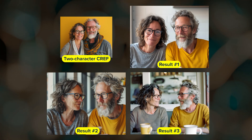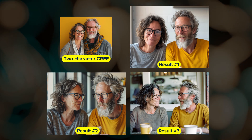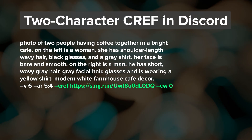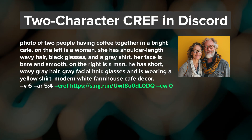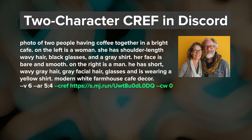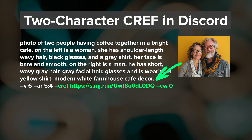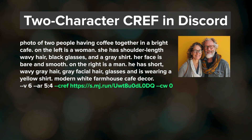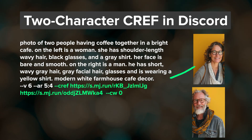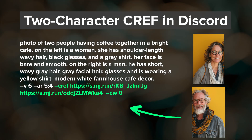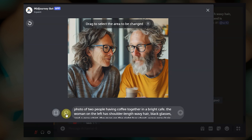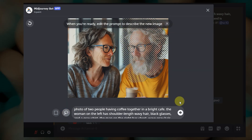Here are some of the results that I got with this approach after a few tries. In Discord, follow the same steps by typing your prompt, add the character reference parameter, then paste the URL to either your two-character image or two image URLs — one for each character. If you use two image URLs, just make sure to separate each one with a space. And if you need to fix the faces in a result that you like, follow the previous method using vary region.